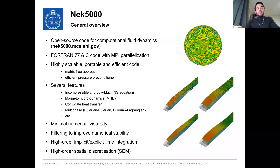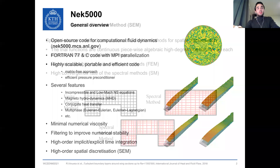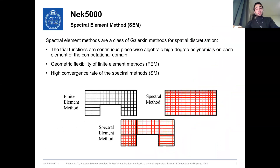We use second- or third-order backward differentiation schemes for time integration, treating the non-linear term explicitly and the remaining Stokes problem implicitly, and we have spectral element method as a spatial discretization. I think that this is one of the most important design choices behind NEC. Spectral element methods belong to the Galerkin class, so we define a trial function as a continuous piecewise algebraic polynomial. They combine the geometrical flexibility of finite element method with the exponential convergence of spectral methods, because basically each element is considered as a spectral subdomain, where we can guarantee the exponential convergence of the solution.